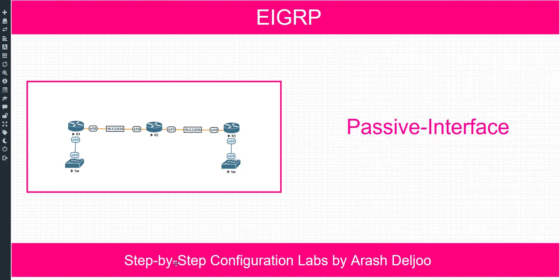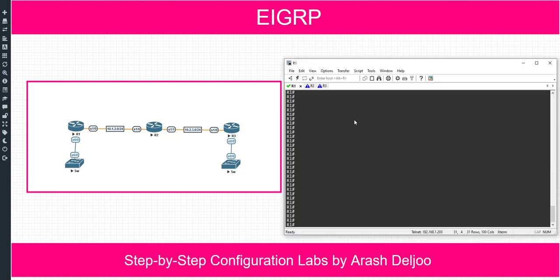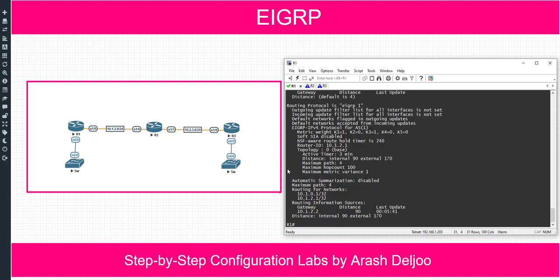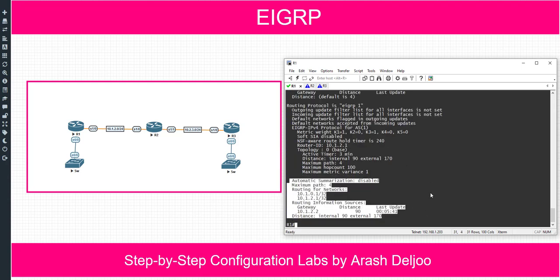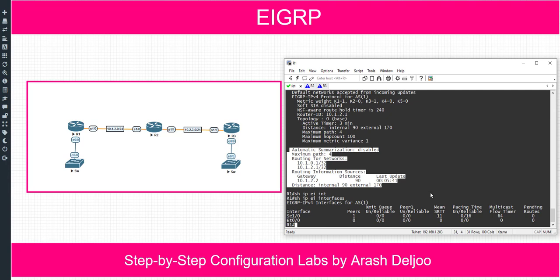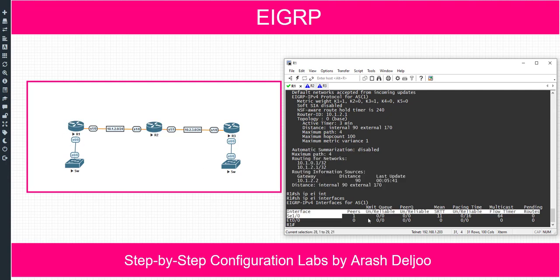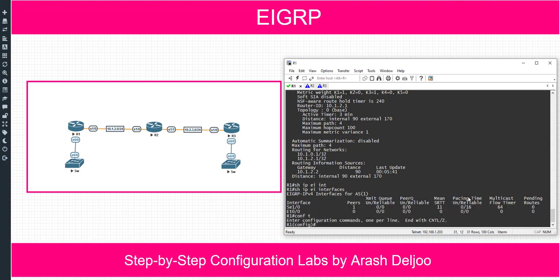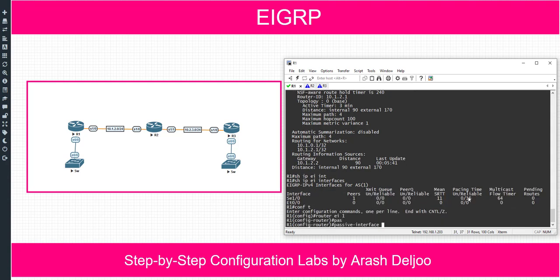Let me show both methods. First, on Router 1, 'show ip protocols' shows we don't have any passive interfaces. 'Show ip EIGRP interfaces' shows serial1/0 and eth0/0 as EIGRP-enabled interfaces. Now let me configure 'router EIGRP 1' and apply 'passive-interface eth0/0'.